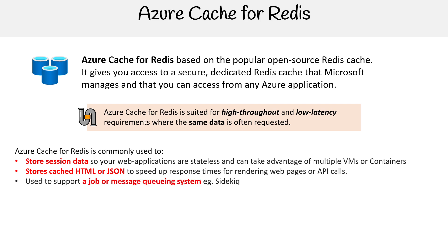Another use case is a job or message queuing system. If you're in the Ruby on Rails world, a very common queuing system is called Sidekick, and it uses Redis. Another thing in Ruby on Rails — if you want to use Action Cable for doing pub/sub real-time features, like building a chat system or a game, that's backed by Redis. So those solutions aren't going to change; you can usually use Redis for those things.